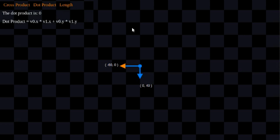Let's go ahead and get to the next cool thing you can do with dot product. If these two vectors are 90 degrees apart, they're going to be at a dot product of 0.